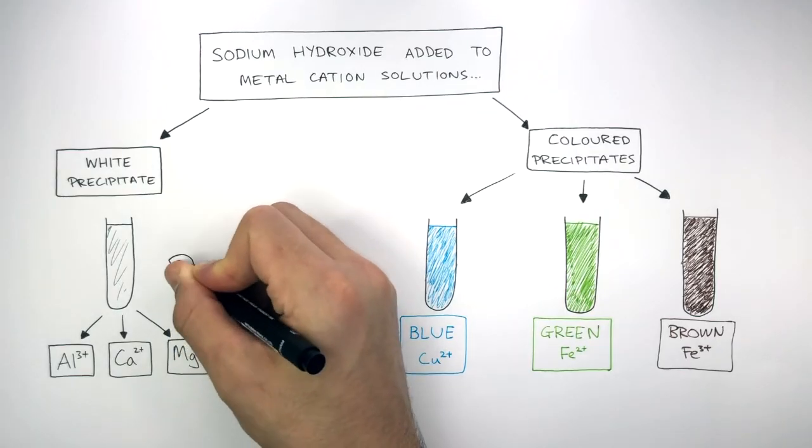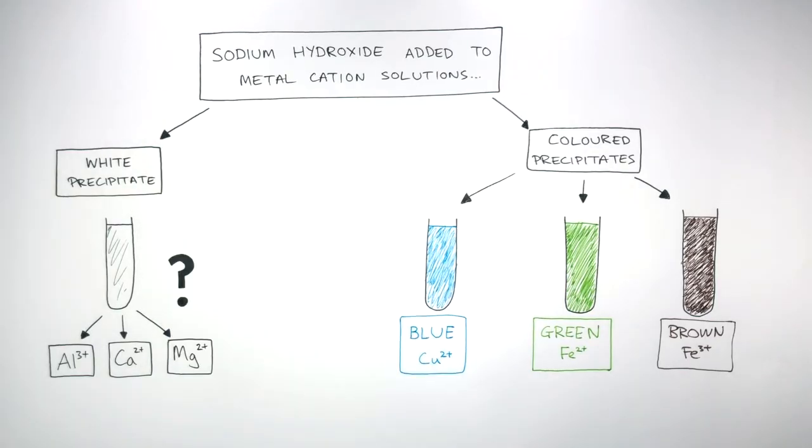Now the question is, if we know a white precipitate can be an aluminium ion, a calcium ion, or a magnesium ion, how can we tell the difference if they all form the same coloured precipitate?